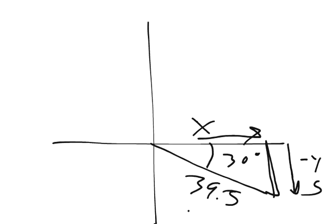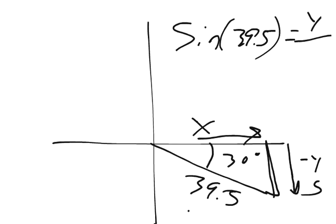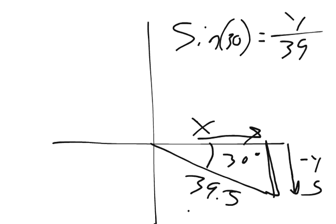We can say sine of 39.5 degrees equals y units over 39.5. I'm sorry. Back that whole thing up. Sine of 30 degrees equals y units over 39.5 units.